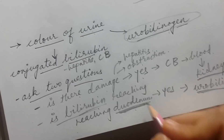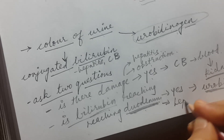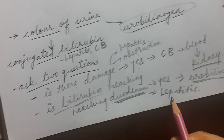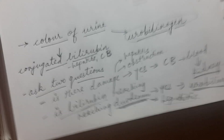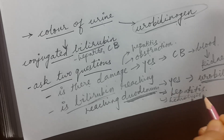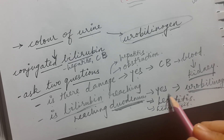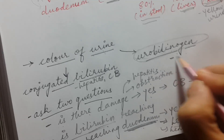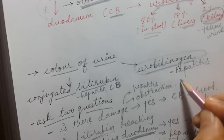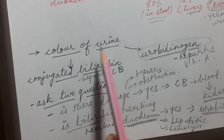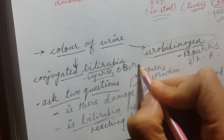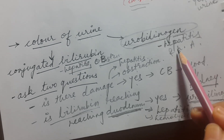The two causes in which bilirubin reaches the duodenum are hepatitis — where bilirubin still reaches the duodenum, though less than normal — and hemolytic anemia, where there is no problem with bile canaliculi or bile duct. So dark urine due to conjugated bilirubin: hepatitis and obstruction. Dark urine due to urobilinogen: hepatitis and hemolytic anemia.